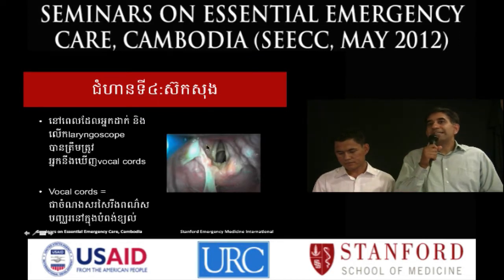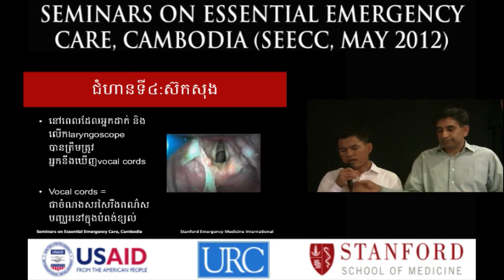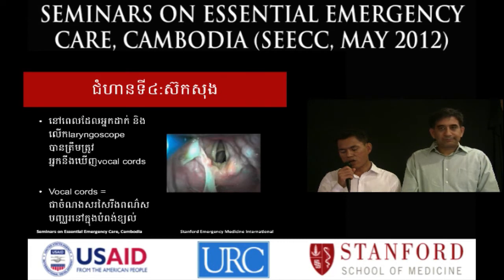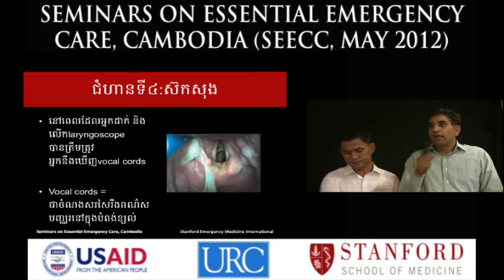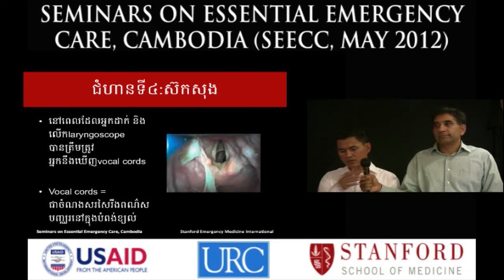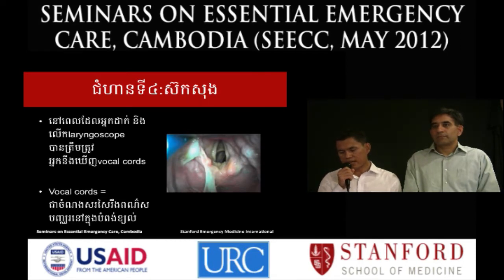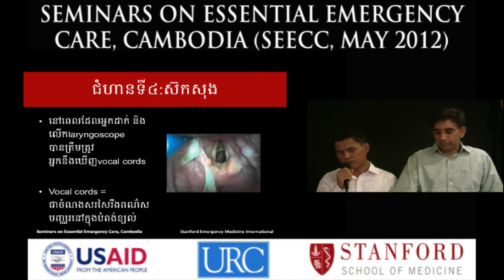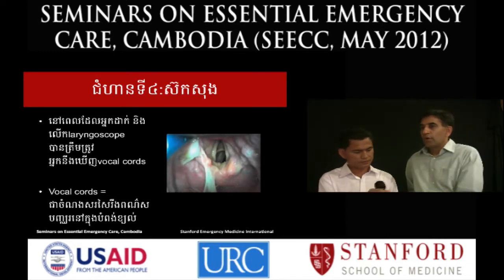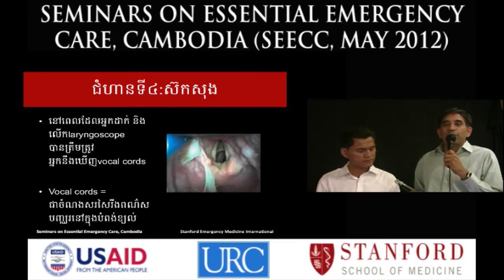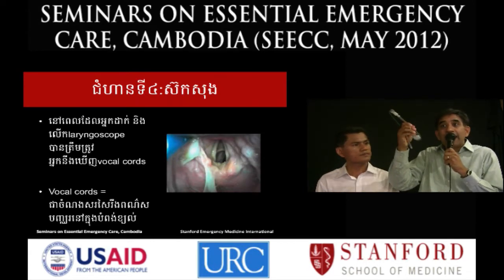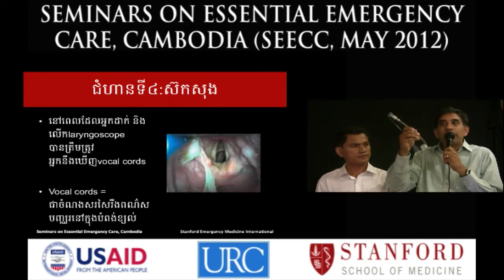The glottis, or the glottic opening, is the space between the vocal cords. This is the narrowest part of the adult airway. Your goal is to see the vocal cords with your eyes and pass the endotracheal tube between them.